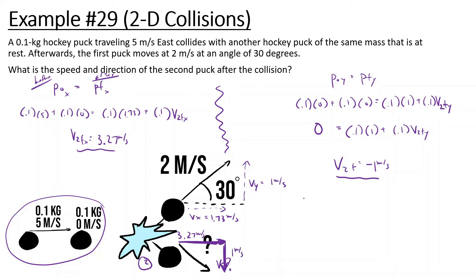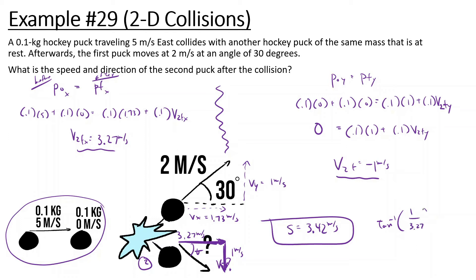Now let's use the Pythagorean theorem to find the speed and direction. The speed is the square root of 3.27 squared plus 1 squared, which gives us 3.42 m/s. For the angle, tan inverse of 1 divided by 3.27 gives us 17 degrees. Since the puck goes below the axis, the direction is negative 17 degrees.